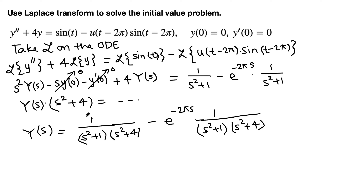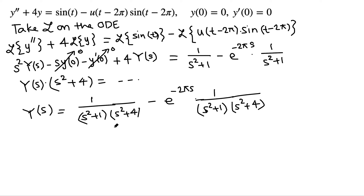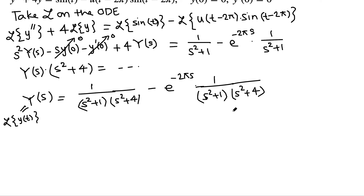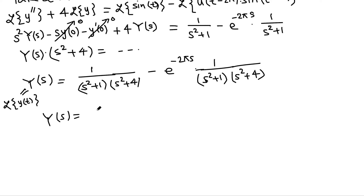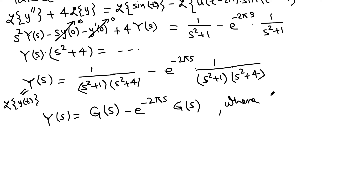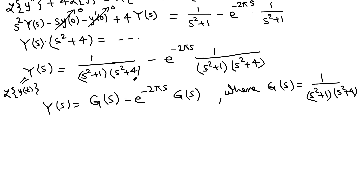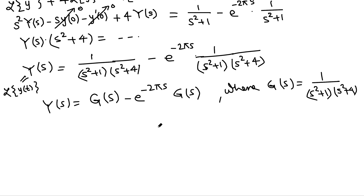We notice the same fraction 1/((s² + 1)(s² + 4)) appears in both terms, so to avoid working on it twice, we define G(s) = 1/((s² + 1)(s² + 4)). We need to prepare this fraction for the inverse Laplace transform by decomposing it into partial fractions.